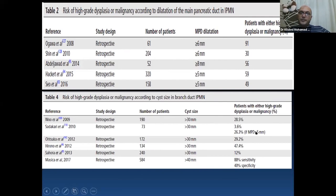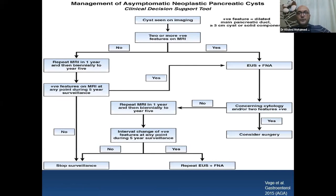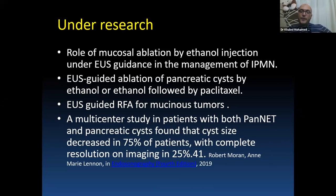IPMN can recur in the remaining parts of the pancreas following surgery. There are emerging roles for mucosal ablation by ethanol injection, radiofrequency ablation (RFA), or chemotherapy injection. A multicenter study in patients with pancreatic neuroendocrine tumors and mucinous or IPMN cystic lesions who refused or were unfit for surgery found that cystic lesion size decreased by 75% with complete resolution on imaging in 25%, representing promising data for RFA of malignant pancreatic cystic lesions.